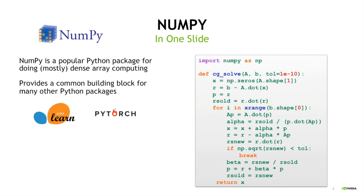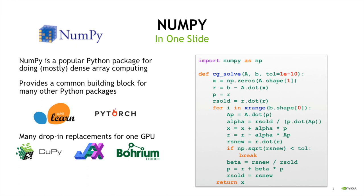NumPy provides a really great building block for many other Python packages. Things like scikit-learn and PyTorch are both built on top of NumPy — it's a fundamental building block for a lot of other Python libraries. As a result, people have been trying to accelerate it to run on GPUs, and there have been many examples of drop-in replacements for NumPy for GPUs.